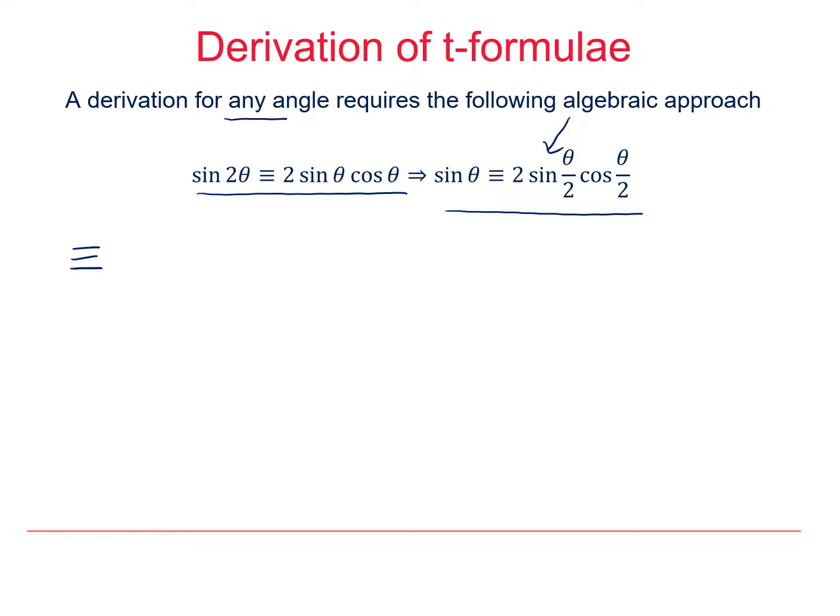So I'll keep the 2, and if I have sin(θ/2) divided by cos(θ/2), I've divided by cos(θ/2), so I need to multiply by cos(θ/2).